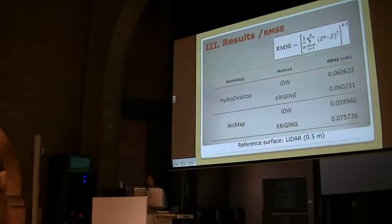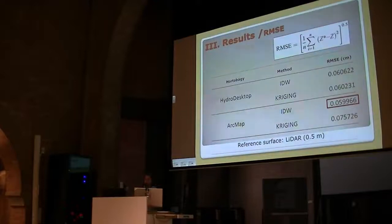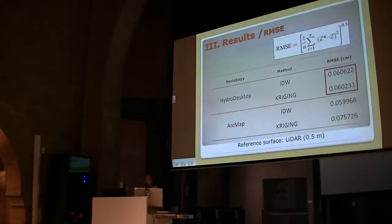You can see the results on this table, where the value of RMSE is very small. Interpolation by IDW in ArcMap has the lowest value of RMSE, however in this software, kriging interpolation represents the most unfavorable value as well. The results in the case of interpolation by HydroDesktop do not show substantial differences.